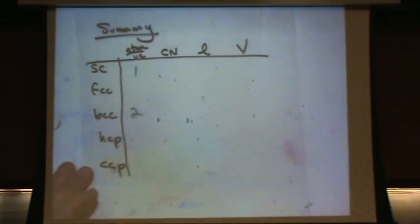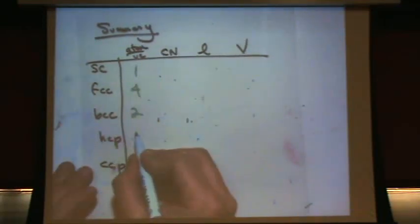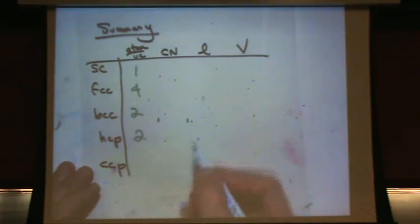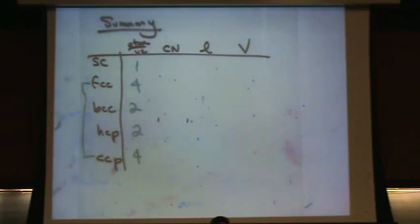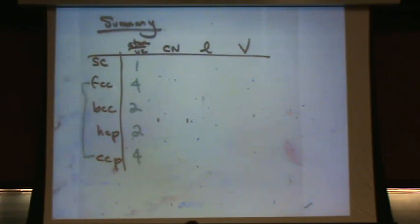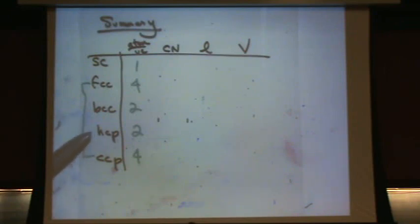I'd encourage you, if you can, to just draw them out and visualize them. Which two of these are the same? These two here are identical: CCP, cubic close-packed, and FCC, face-centered cubic, are the same. SC is simple cubic. BCC is body-centered cubic. HCP is hexagonal close-packed.